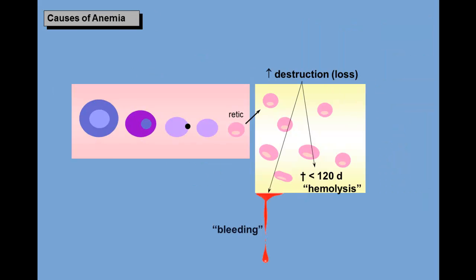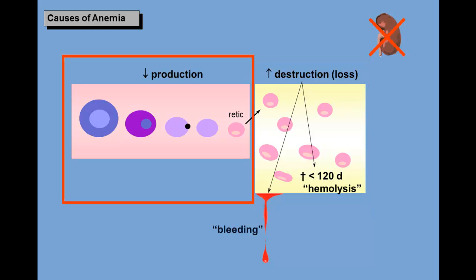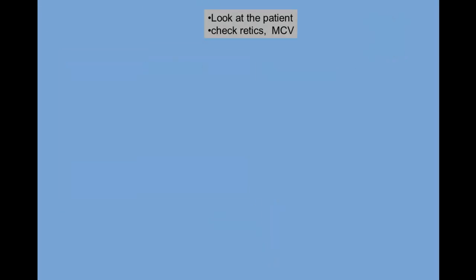We learned that there are only two basic pathophysiologies of anemia: either premature destruction of red cells — bleeding or hemolysis — or decreased production, either a kidney problem or a marrow problem. In this video, we will put it all together and develop an elementary algorithm for developing a differential diagnosis for anemia. Start by looking at the patient.